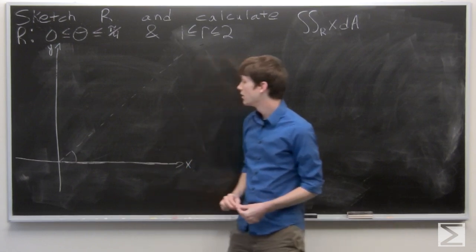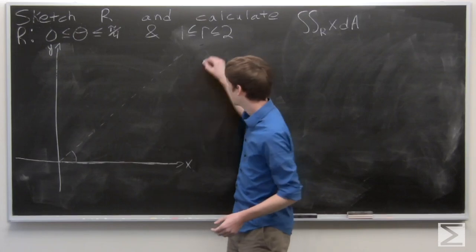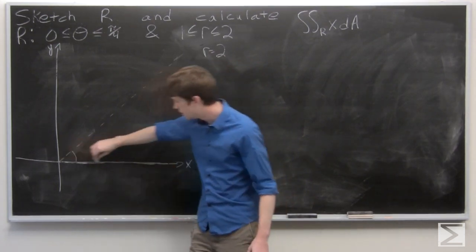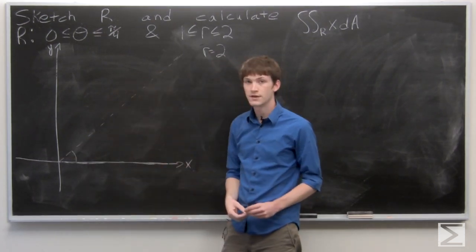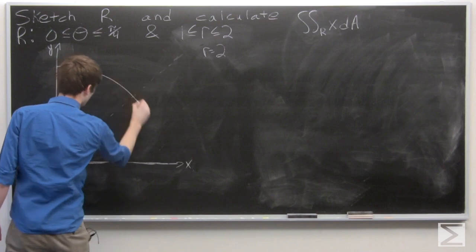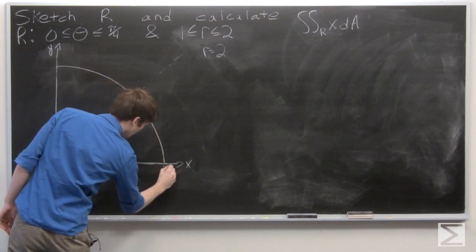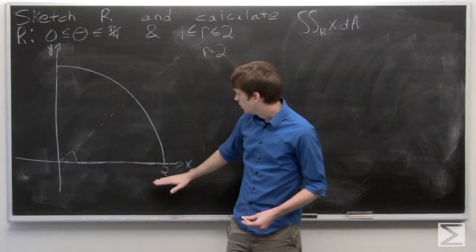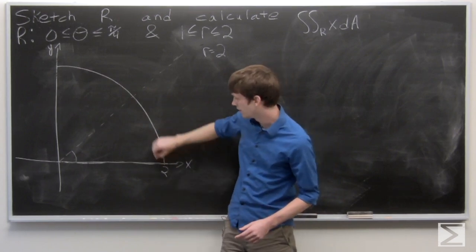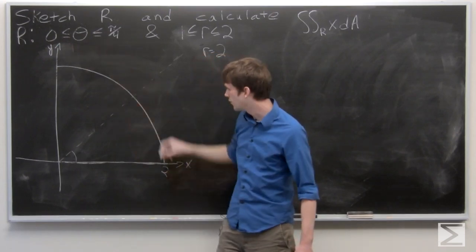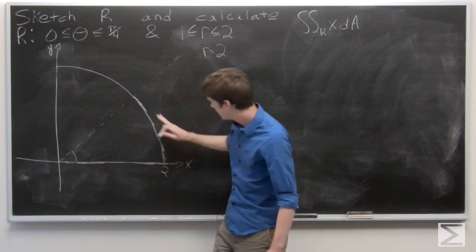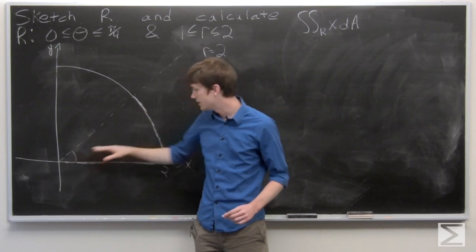So we can look at when R is equal to 2. That means that we're a distance of 2 away from the origin at all points. So that defines a circle around the origin of radius 2. So we're bounded above by this circle. Our theta tells us that we're between 0 and pi over 4, so we're really only interested in everything less than 2 within this little wedge.